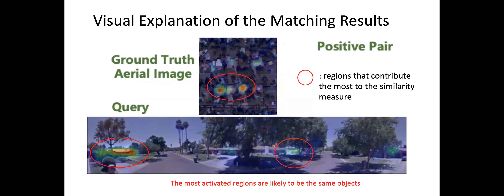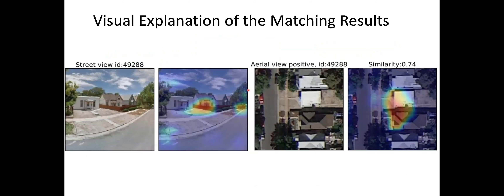In this work, we adapt gradient CAM for metric learning applications. The activation map highlights the regions contributing most to the final matching similarity. For one example, the gradient CAM activation map on the street view image highlights holes and the front of a house, while on the aerial view image the most activated regions correspond to those two houses. In another example, the query highlights the side of a house and the aerial image gradient CAM also highlights that house.